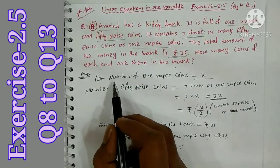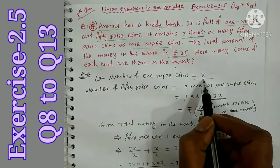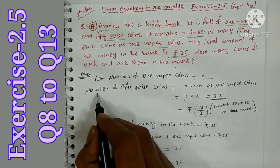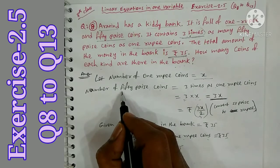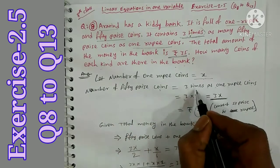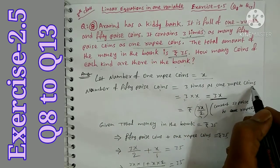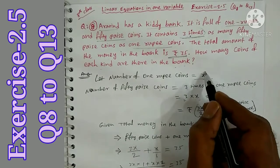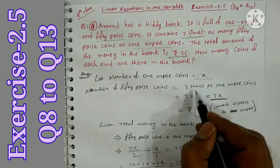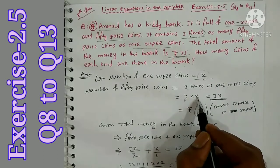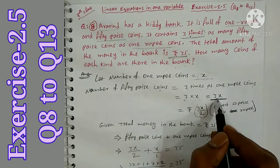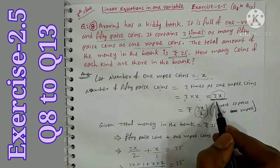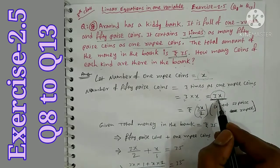Let the number of 1 Rupee coins be x. So 1 Rupee coins = x. Number of 50 Paise coins is 3 times the 1 Rupee coins, so 3 into x = 3x. This 3x represents the 50 Paise coins.